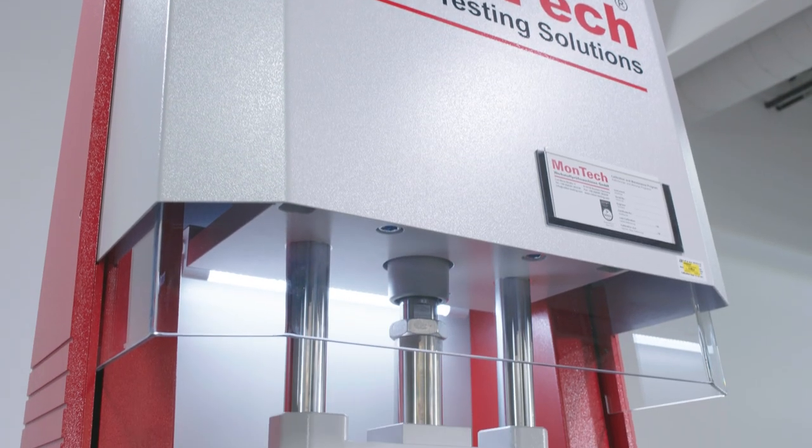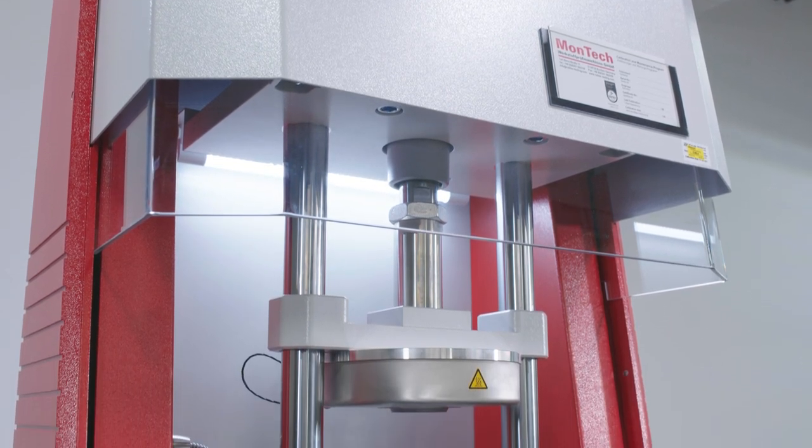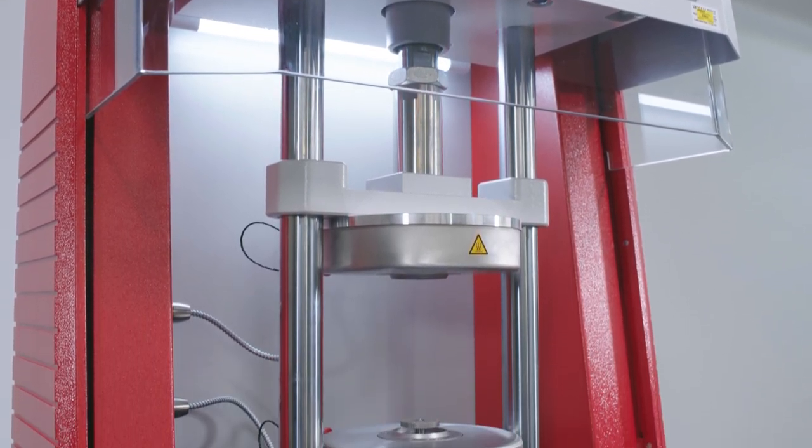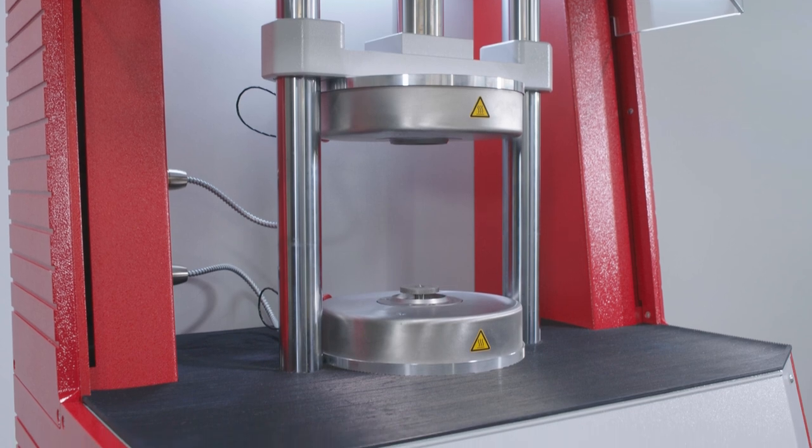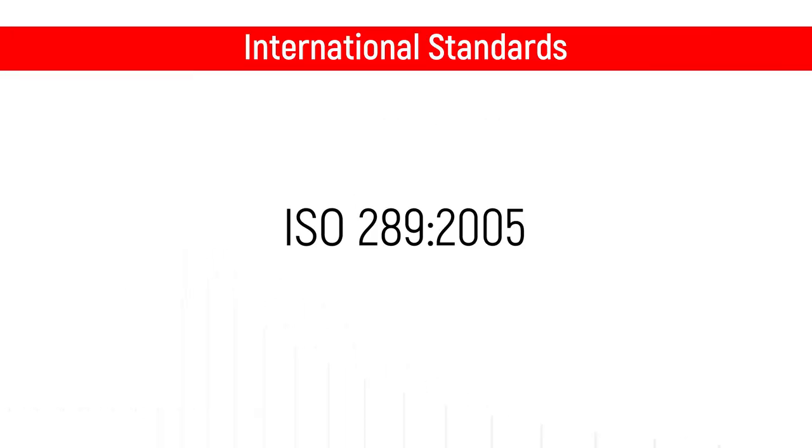It is perfect for gathering basic viscosity information among other material properties, whether for incoming inspections, general quality control, or research and development. The MV3000 meets all standards required by ISO 289-2005 and ASTM D1646.